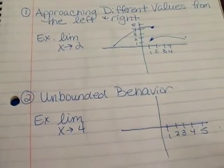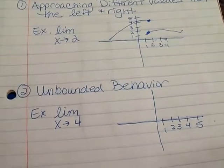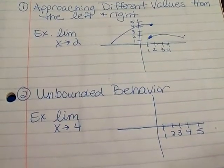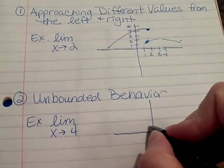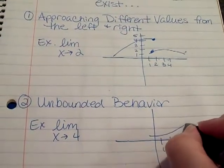The limit may also not exist if we have unbounded behavior. So here, as x approaches 4, what's happening on the graph? Here's our 4. So if we have a graph from the left, we're coming up here at 4.